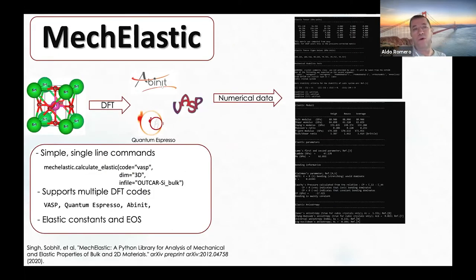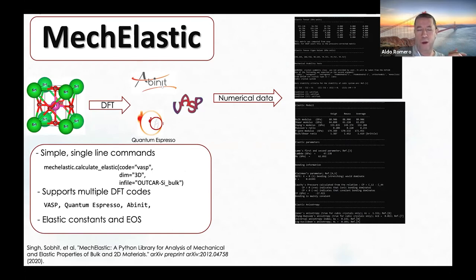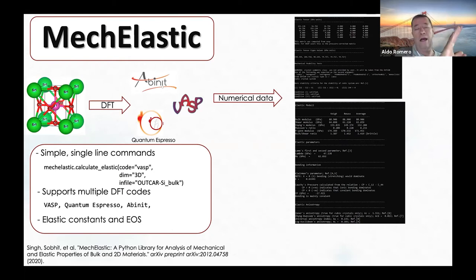The second package I want to present is called MakeElastic—a recent development. Right now it interfaces with Abinit, VASP, and Quantum Espresso. Recently, about two weeks ago, we finished an implementation with a package for dynamical mean field theory combined with DFT, which interfaces with VASP and SIESTA, allowing DMFT-based elastic constant analysis.